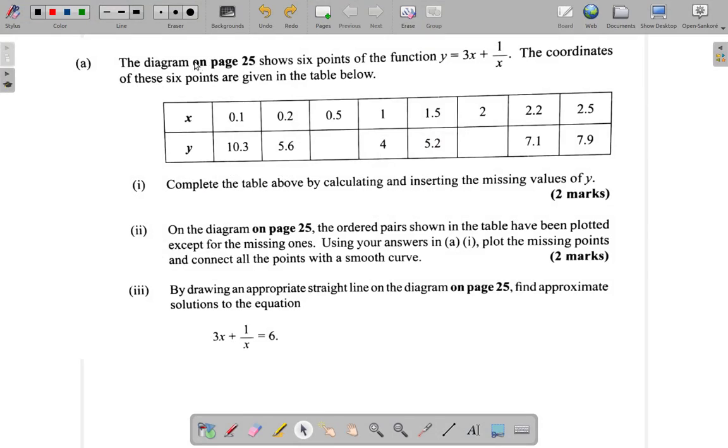Question 8A. It says the diagram on page 25 shows six points of the function y equals 3x plus 1 over x. The coordinates of these six points are given in the table below. Complete the table above by calculating and inserting the missing values of y.